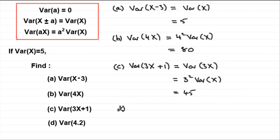Now, we've got D, and we've got the variance of 4.2. And 4.2 is just a constant. And the variance of a constant is simply 0.